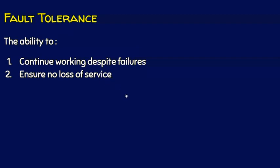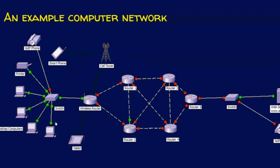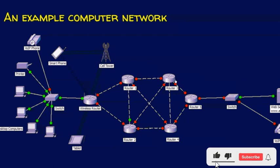We shall see an example for fault tolerance now. Assume that these two entities are communicating with each other: this computer and this web server, through a switch, this wireless router, this link, router 1, router 3, router 5, a switch, and the web server.